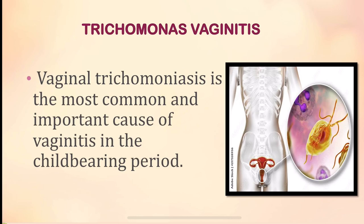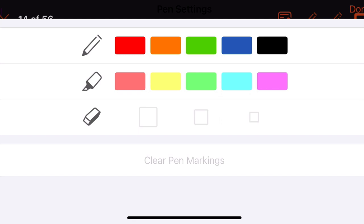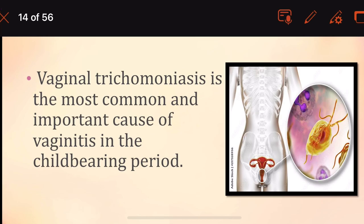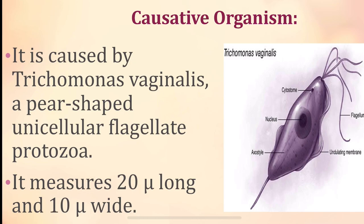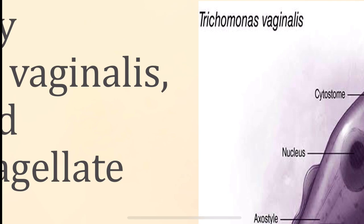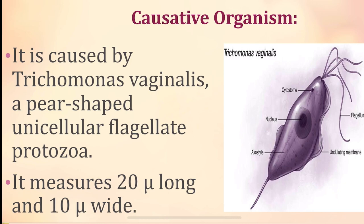Moving on to trichomonas vaginitis — vaginal trichomoniasis is the most common and important cause of vaginitis in the childbearing period. Trichomonas vaginitis is caused by Trichomonas vaginalis; 'itis' means inflammation, and 'vaginalis' is the name of the organism causing it.